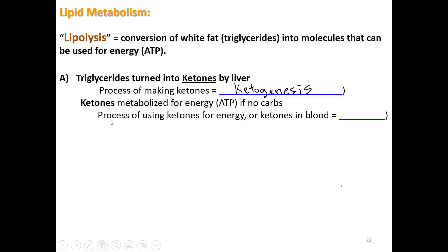Ketones get spilled into the bloodstream by the liver. You can measure this with ketone dipsticks for urine or in the blood. The process of using ketones for energy — or having ketones in the blood — is ketosis. I know people who were doing this and were happy checking their keto sticks saying 'I'm in ketosis!' But that's actually your body crying for help, saying we're switching to fat and ketones for energy because we don't have enough carbohydrates.